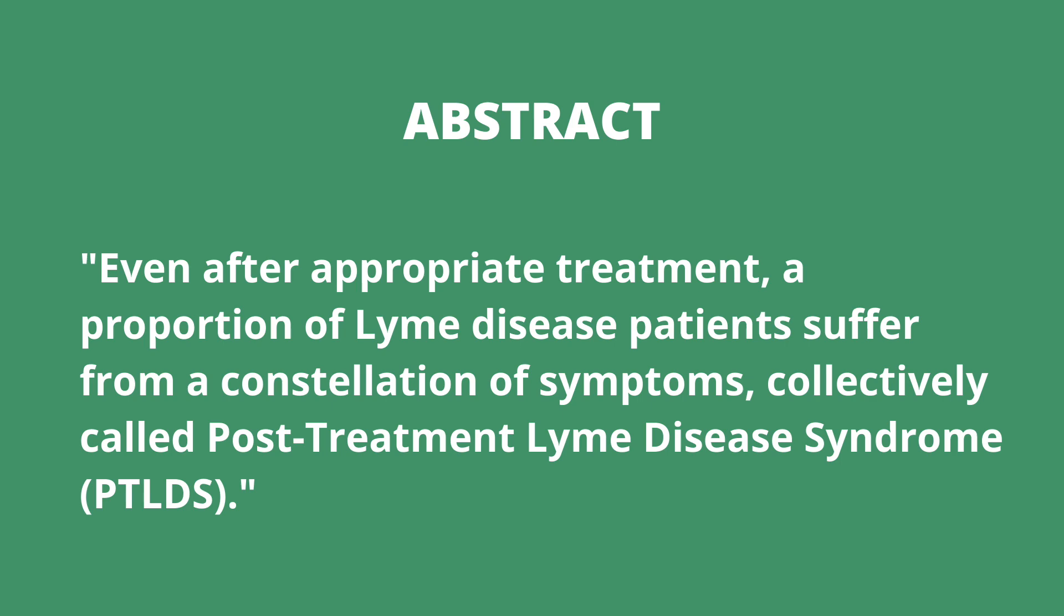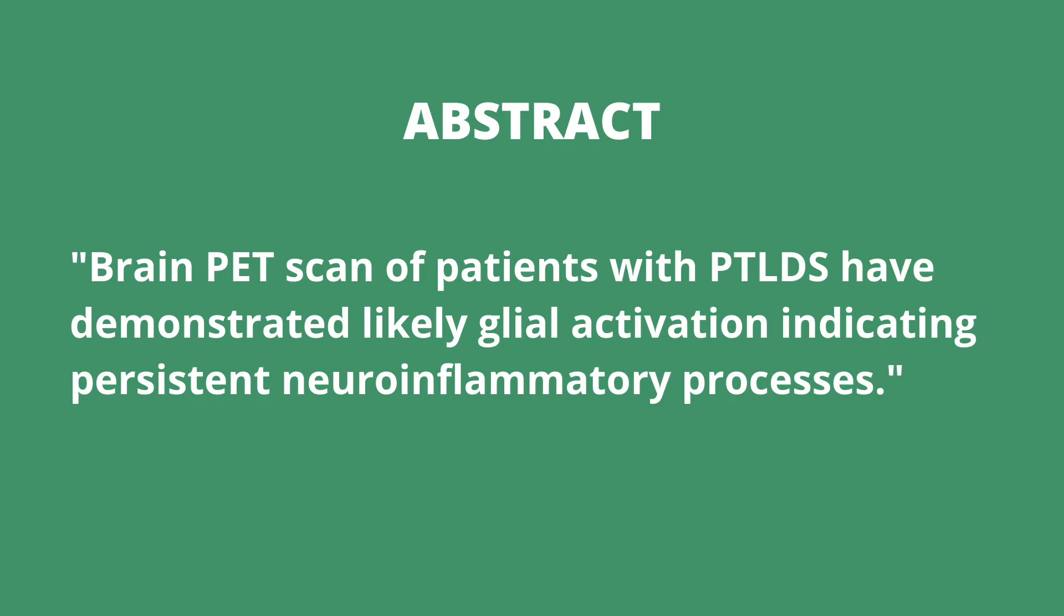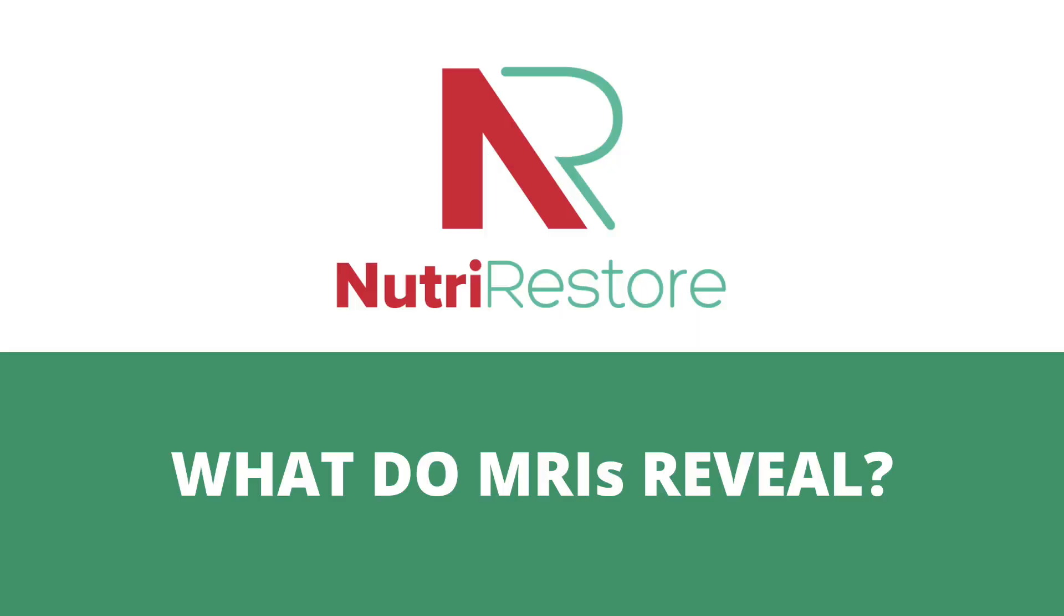Here is the intro. Even after appropriate treatment, some people still have symptoms. This is often called chronic Lyme or post-treatment Lyme disease. Now, brain PET scans have seen neuroinflammation on people with chronic Lyme. We know there's neuroinflammation, but I rarely get anyone in the office with a brain PET scan. If people have nerve symptoms, what I see is generally MRIs. MRIs show structure. They don't really show function. And for the most part, MRIs are clear.